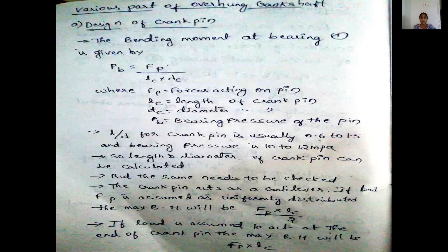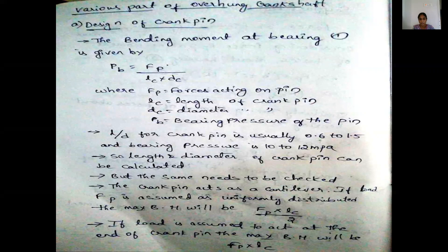Various parts of the overhang crankshaft: first, design of crankshaft. In the design of crankshaft, you find out the bearing pressures and forces depending on the design. Pb is equal to Fp divided by Lc into dc — that is the bearing pressure. The Lp-to-d ratio in the crankshaft is usually 0.6 to 1.5, and bearing pressure is taken as 10 to 12 megapascals. The basic maximum bending moment of the crank is Fp into Lc by 2.